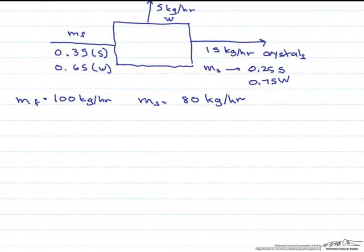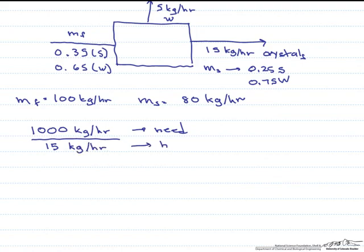And the scaling factor is this ratio of what we need. So what we need is a thousand kilograms per hour, and we divide it by what our model produces, which is 15 kg per hour. And when we calculate that ratio, we get 66.7, which is what's known as our scaling factor.